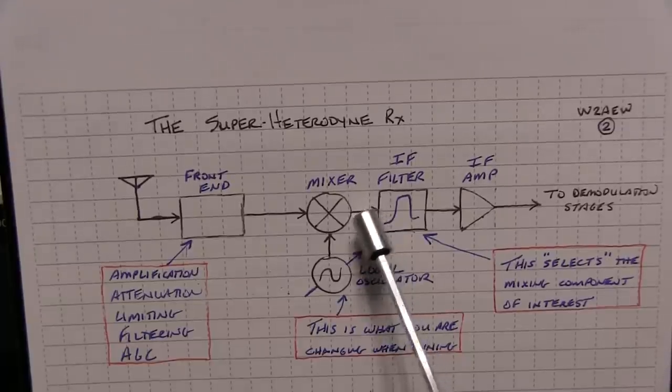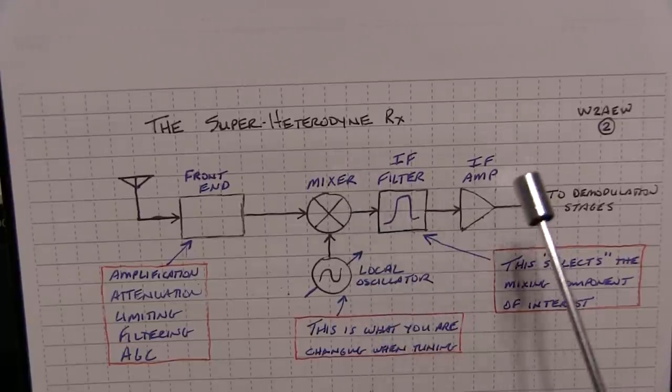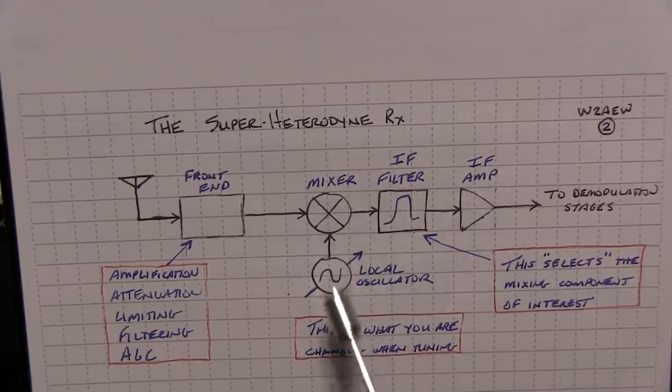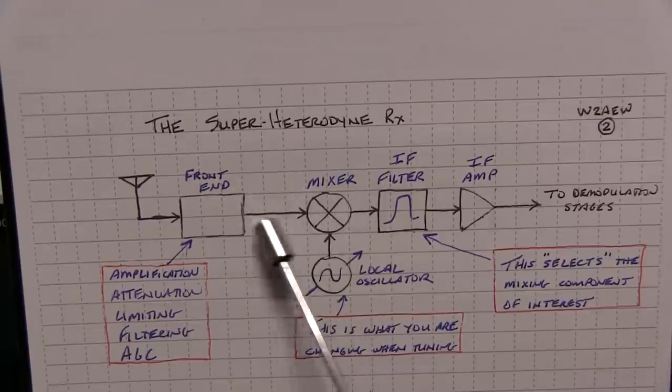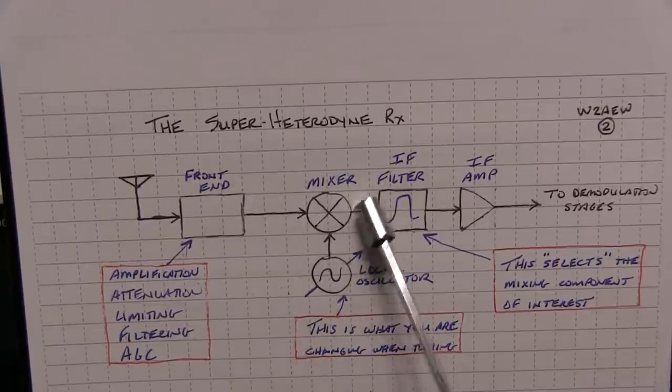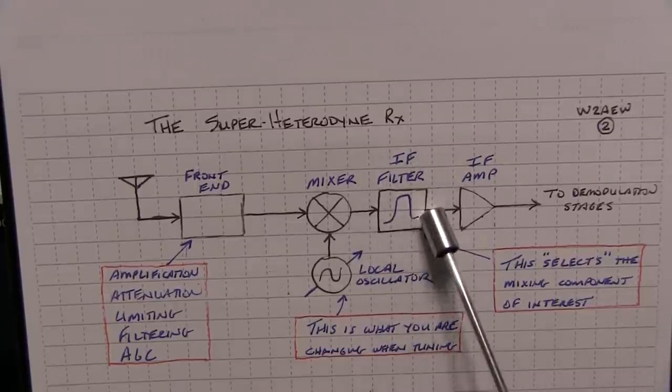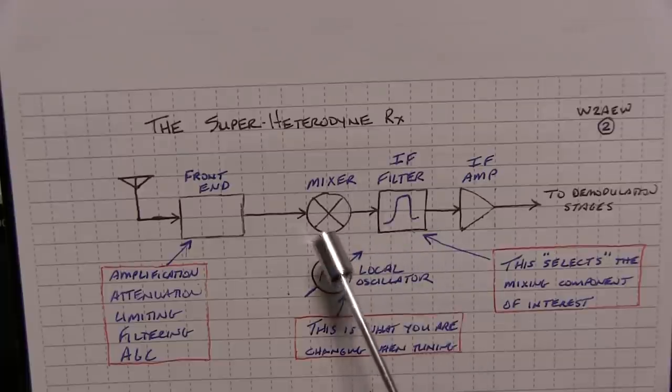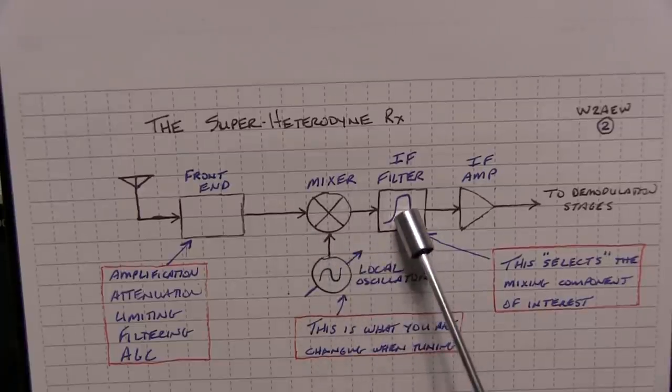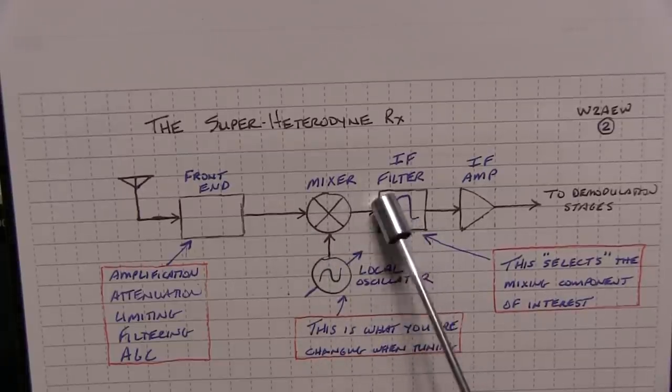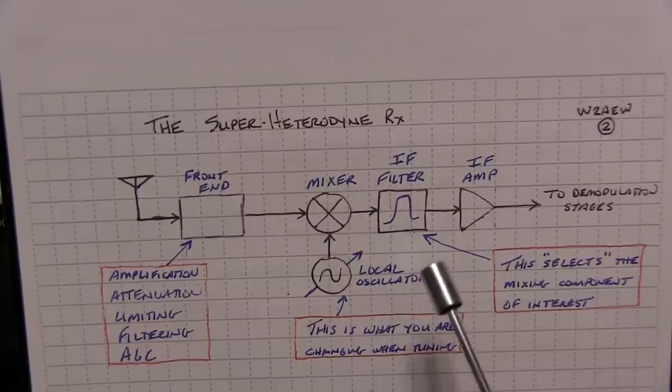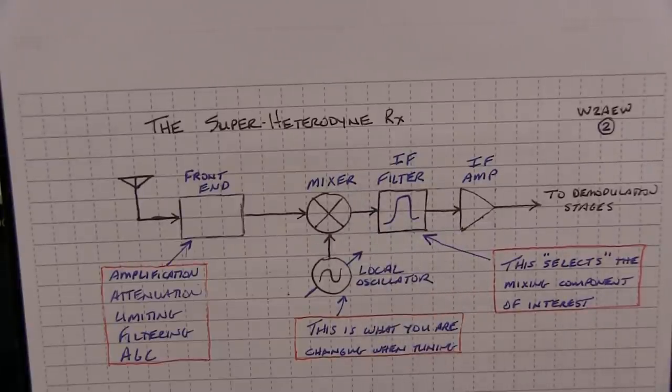Now as we described, the output of that mixer is going to consist of a number of different frequency components. Some in different frequencies of the local oscillator, and then all of the signals present at the input. So there's going to be a whole pile of signals appearing here. It is the job of the IF, or intermediate frequency filter, to select just the particular frequency of interest that you actually want to receive, and that's going to reject everything else on either side of it. We'll take a look at this graphically in a moment, and actually go probing around in the receiver to take a look at that.